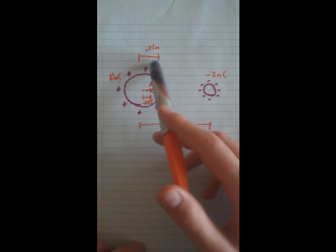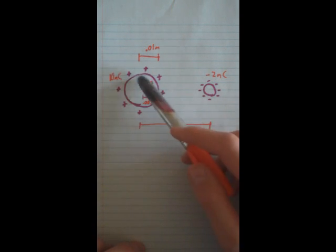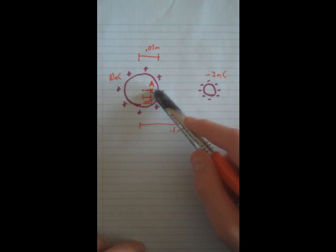This one has a radius of 0.01 meters, and we're trying to find the electric field at this spot A inside of it.